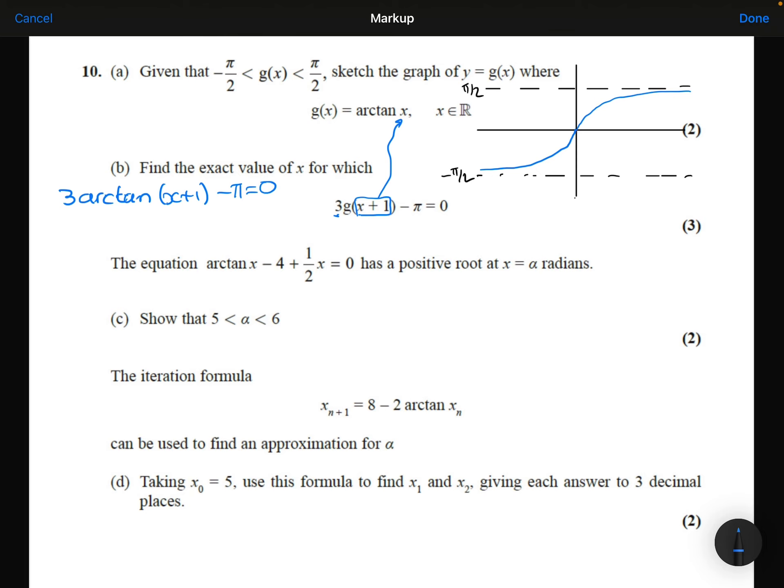I'm then going to add pi to both sides. So 3 arctan x plus 1 equals pi. Divide both sides by 3. So arctan of x plus 1 equals pi over 3.